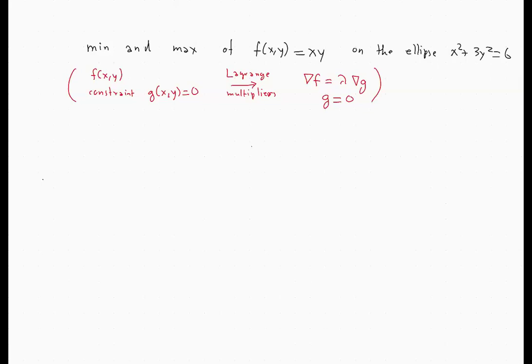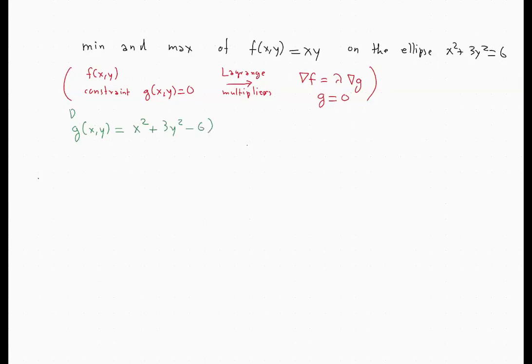First of all, we define the function g(x,y) that gives us the constraint by bringing everything to the left-hand side: g(x,y) = x² + 3y² − 6. Then our system is: the gradient of f equals lambda times the gradient of g, and g equals 0.